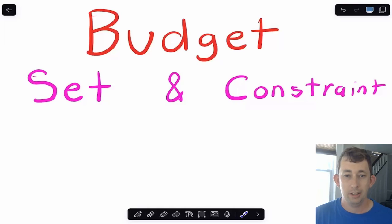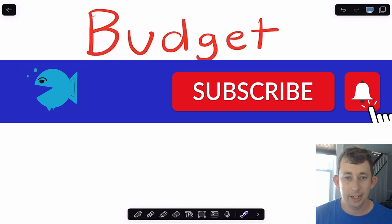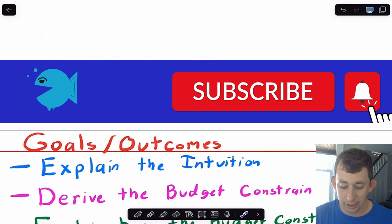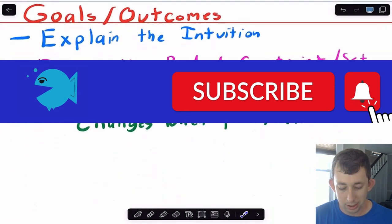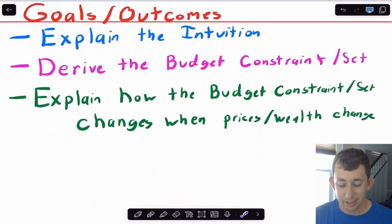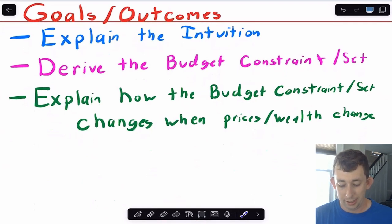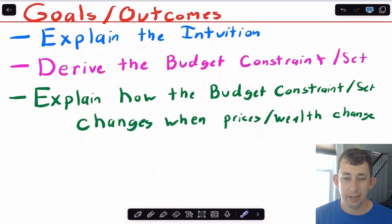Hi guys, welcome back to In Case of Econ Struggles. Welcome to another micro struggle. Today we're talking about the budget set and the budget constraint. We're going to derive both the budget constraint and the set graphically, and then we're going to talk about how the budget constraint and the budget set change when prices and income change.